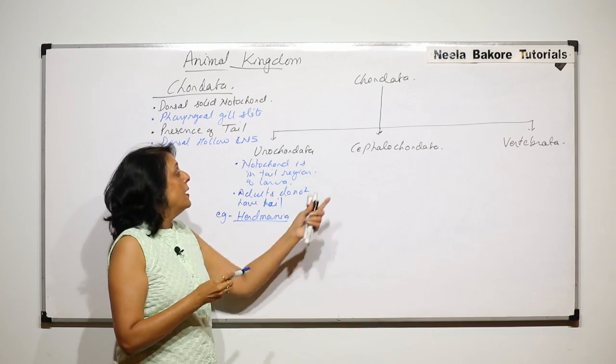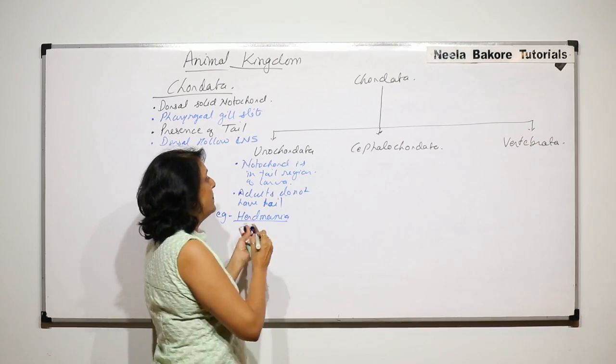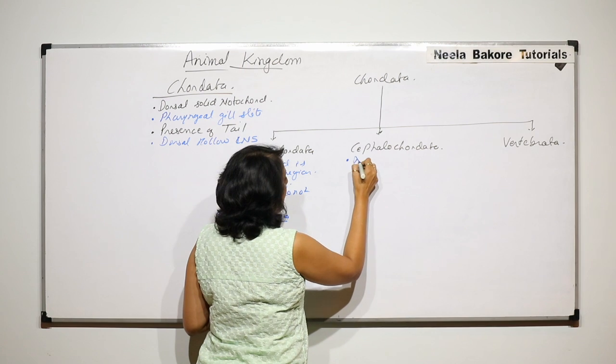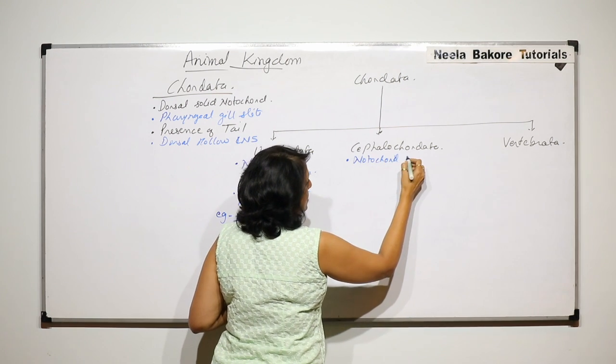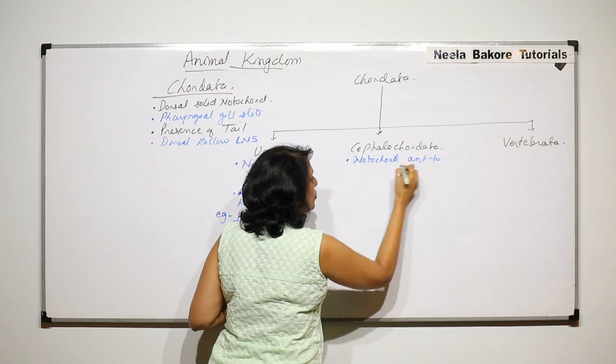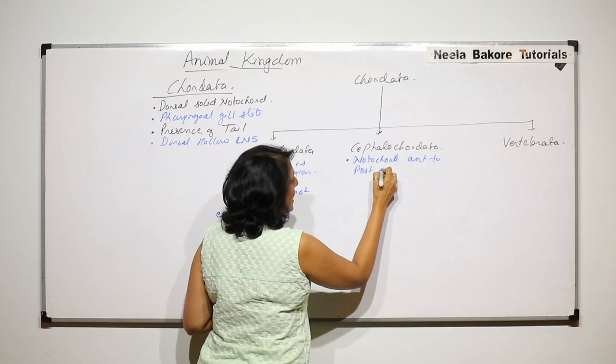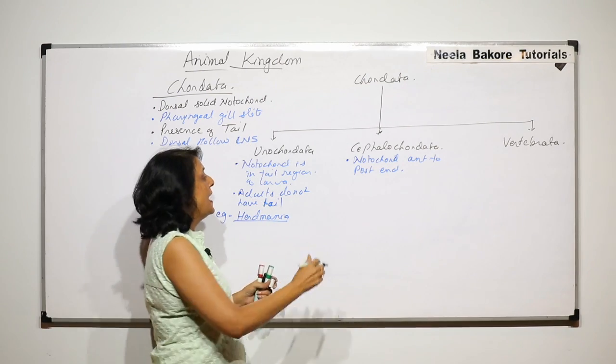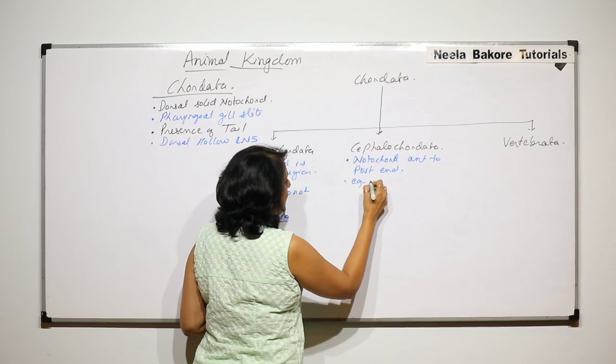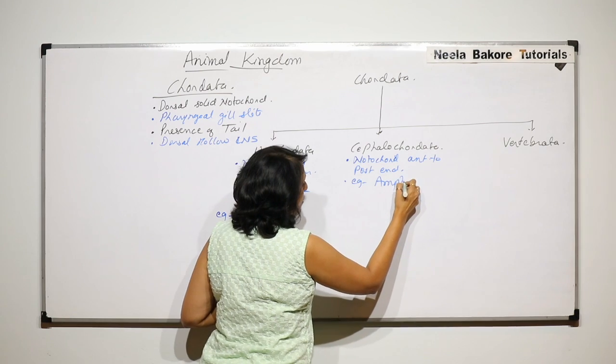Next is Cephalochordata. In Cephalochordata, notochord runs from anterior to posterior end and it remains all throughout the life. The example is Amphioxus.